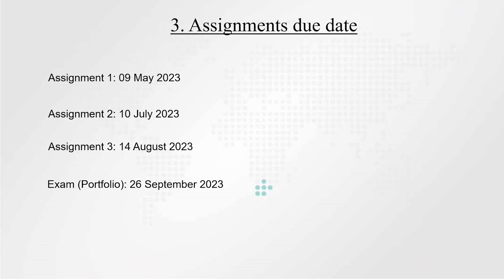Regarding assignment due dates: your assignment one is due on the 9th of May. After assignment one, I give you time to write assignment two — also use this time to start assignment three, because assignment two is due on the 10th of July. One month later, assignment three is due in August. One month after that, your portfolio is due in September. Remember, you can start your portfolio now since it's available in tutorial letter 101.